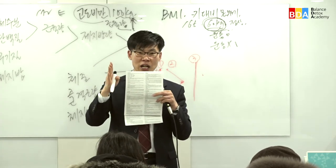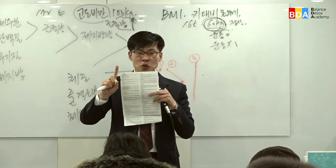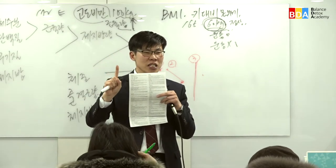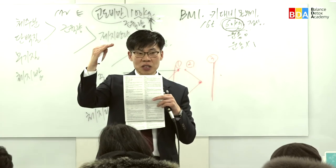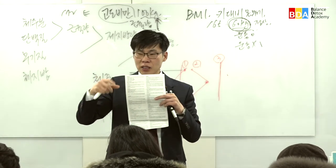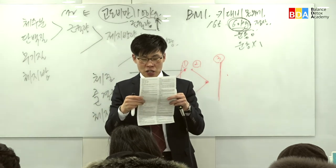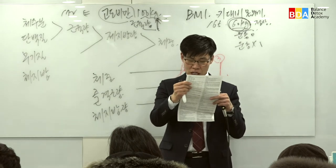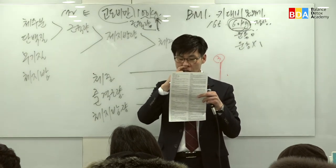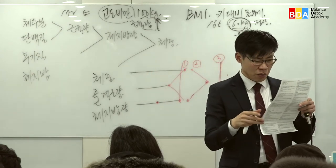키, 체중, 나이에 비해서 기초대사량이 높다면 그 사람은 웬만큼 먹어도 살이 찌기 어려운 체질입니다. 기초대사량이 높은 사람과 낮은 사람의 차이는 에너지 효율의 차이입니다. 내 몸의 에너지 효율이 얼마인지를 기초대사량을 보고 파악하시면 됩니다. 하루에 필요한 열량도 확인하실 수 있습니다.